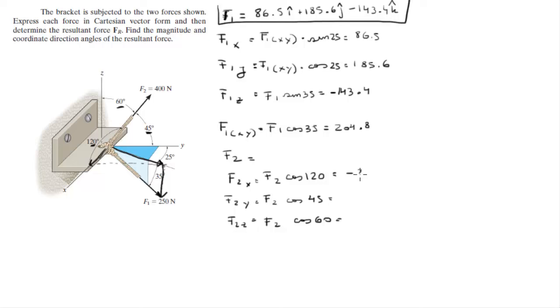These numbers are negative 200, 282.8, and positive 200. So negative 200i plus 282.8j plus 200k.